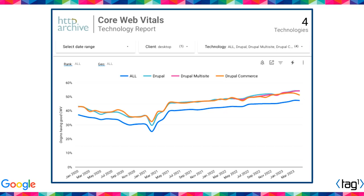One interesting note about the technology report: you can see at the top the technologies that are selected, allowing you to break the report down into different dimensions. Right now it's filtered for Drupal, but you can compare other technologies — site builders, themes, hosting platforms, JavaScript libraries, or CDNs — to understand what within your tech stack is passing Core Vitals and which component has capacity for additional optimization.